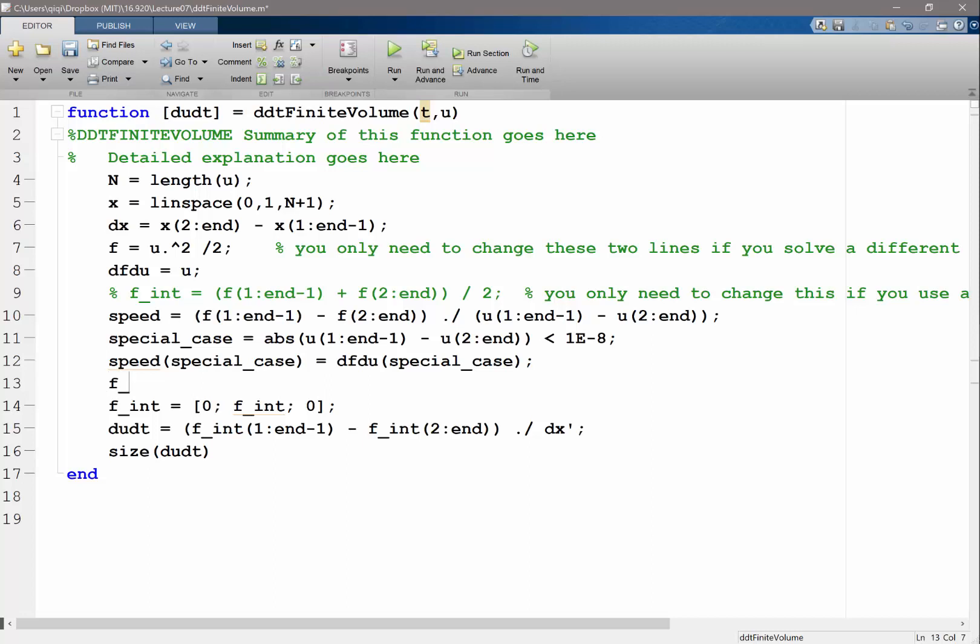Now my fint is going to be what? It's going to be either one way or another depending on the speed, right? So fint is speed greater than zero. Let me see. Let's first assign everything to the left side, so it's f1(n-1).